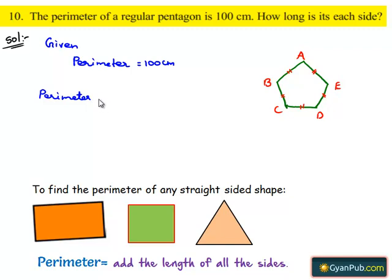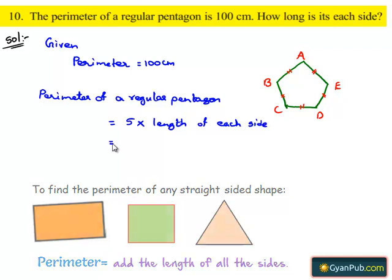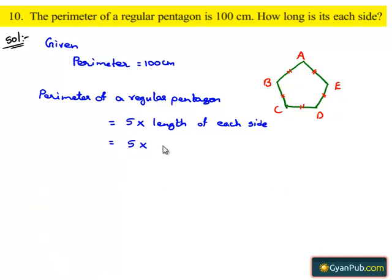And also we know that perimeter of a regular pentagon is nothing but 5 times the length of each side. This is equal to 5 times the side.